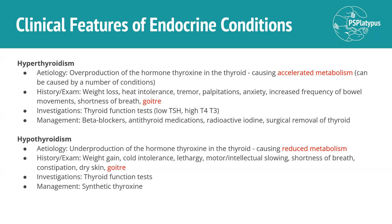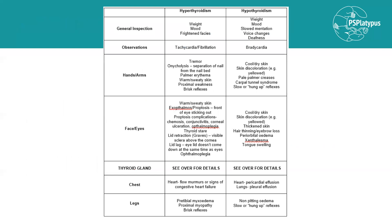Hypothyroidism symptoms include cold intolerance, lethargy, motor and intellectual slowing, shortness of breath, constipation, dry skin, and goitre. Investigations are also thyroid function tests, except the results are reversed — so high TSH and low T4 and T3. Management is simply taking synthetic thyroxine. There's a table in your notes that's worth having a look over; it's similar to what was just covered but a bit more comprehensive. We'll go through some of the findings you'd find on examination shortly.